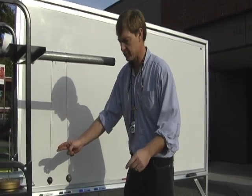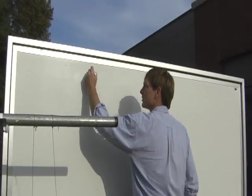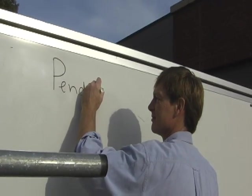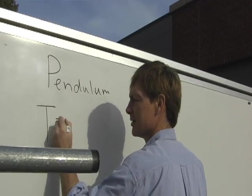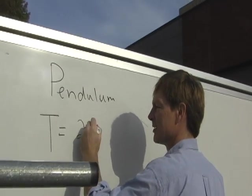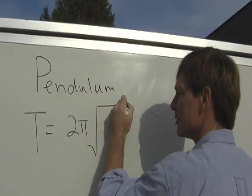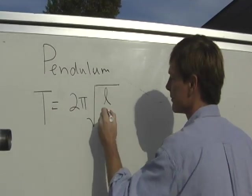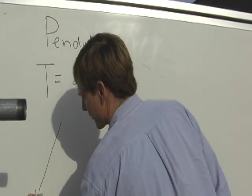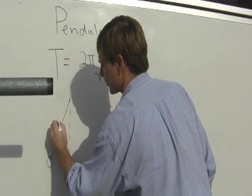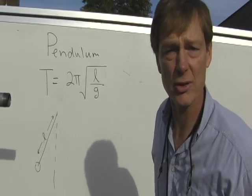It's got a certain period. Time for each cycle - start, finish, start - is given by the period. So for a pendulum, the time it takes for one full cycle, the period is equal to 2π. This is kind of an approximation. It's 2π times the square root of the length divided by the gravitational acceleration. Notice that the length and the acceleration of gravity, they're the only things that are in this equation.